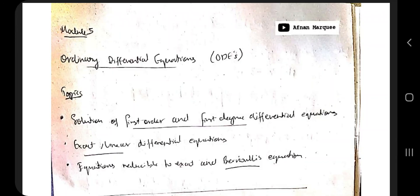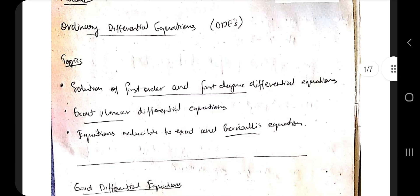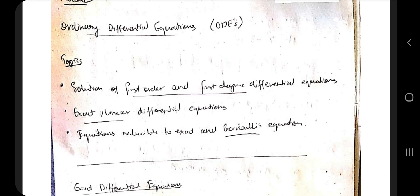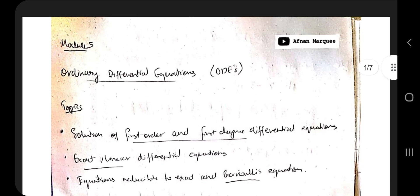Hello everyone, today in this video we will be discussing Module 5 of 18MAT DIP 31. In this module we have two topics: the first one is linear equations and the second is Bernoulli's equation. We will discuss some examples and types of questions which can come under these topics. If you like this video, hit the like button and don't forget to subscribe to my channel.